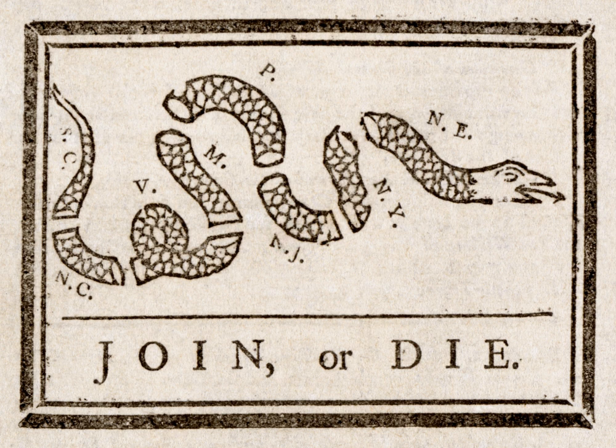The Thirteen Colonies, also known as the Thirteen British Colonies or Thirteen American Colonies, were a group of British colonies on the Atlantic coast of North America founded in the 17th and 18th centuries. They declared independence in 1776 and formed the United States of America.